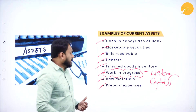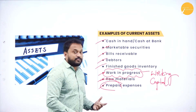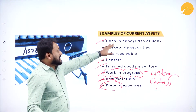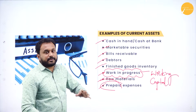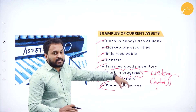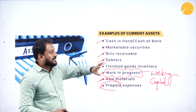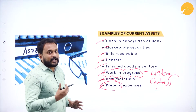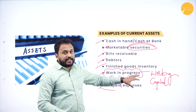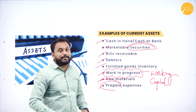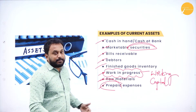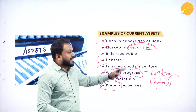Next is prepaid expenses — you have already paid in advance, and you can convert those back into cash. So to recap: cash in hand, cash at bank — these are the current assets. Marketable securities — we are talking about shares here. Bills receivable, debtors, finished goods inventory, work in progress — whatever is required in work in progress, all those things are included. Then raw materials, and lastly prepaid expenses. These are the current assets.